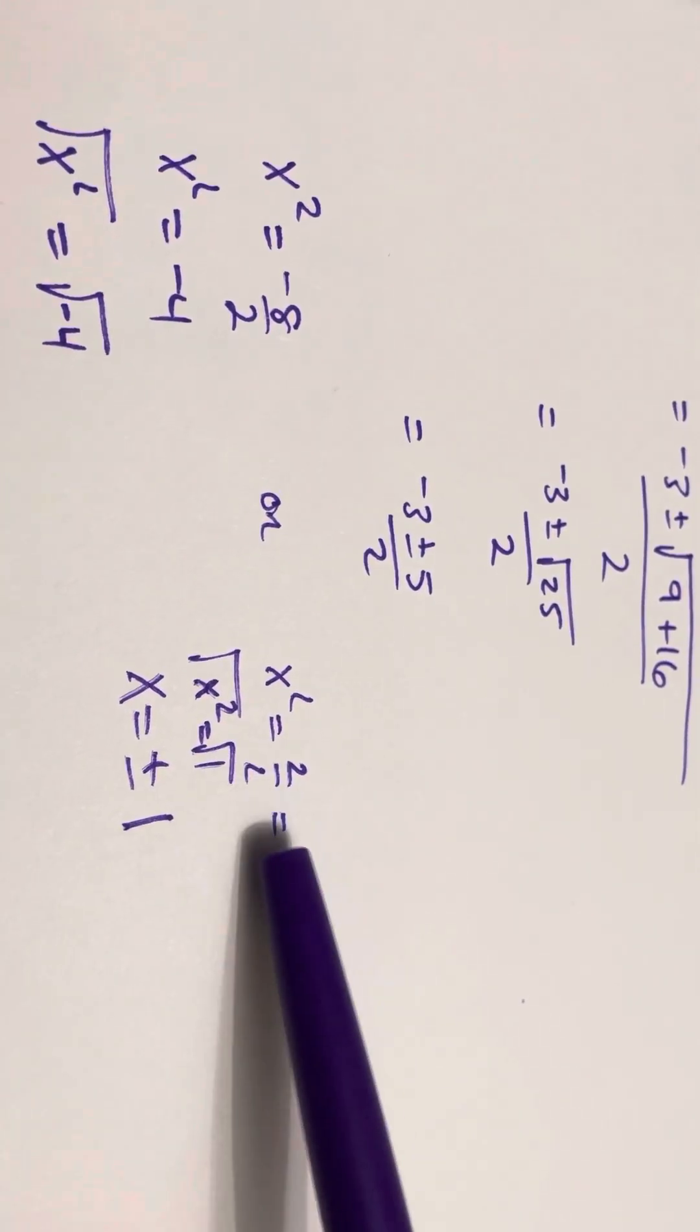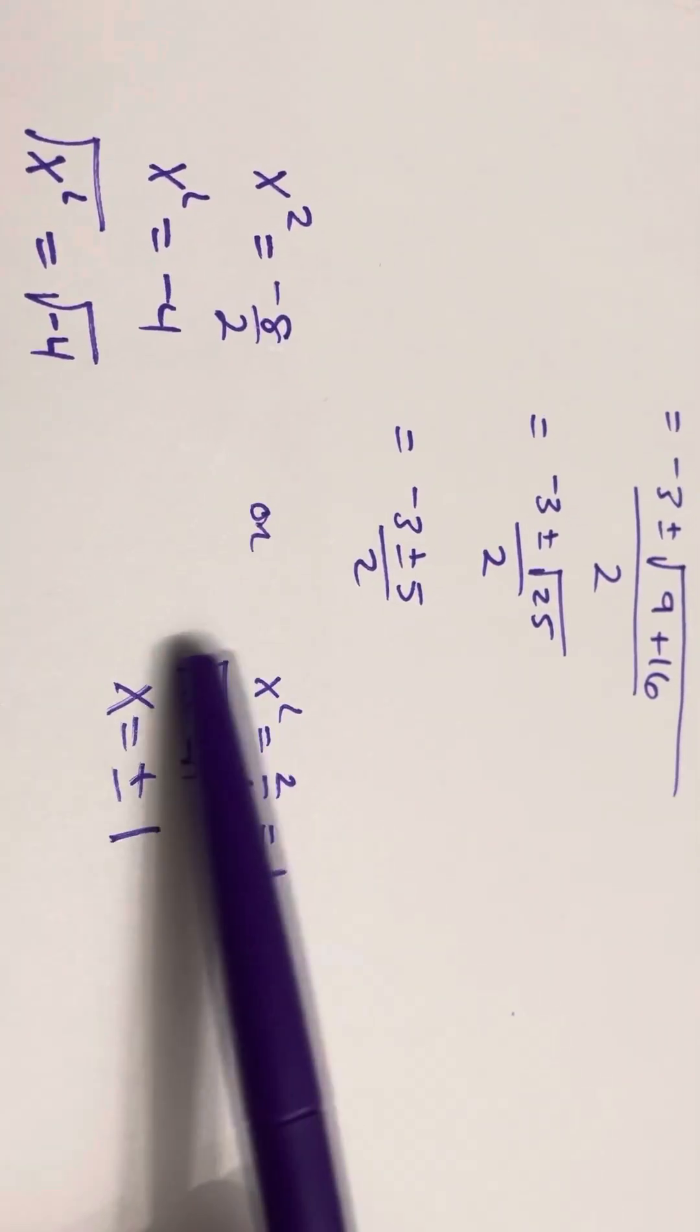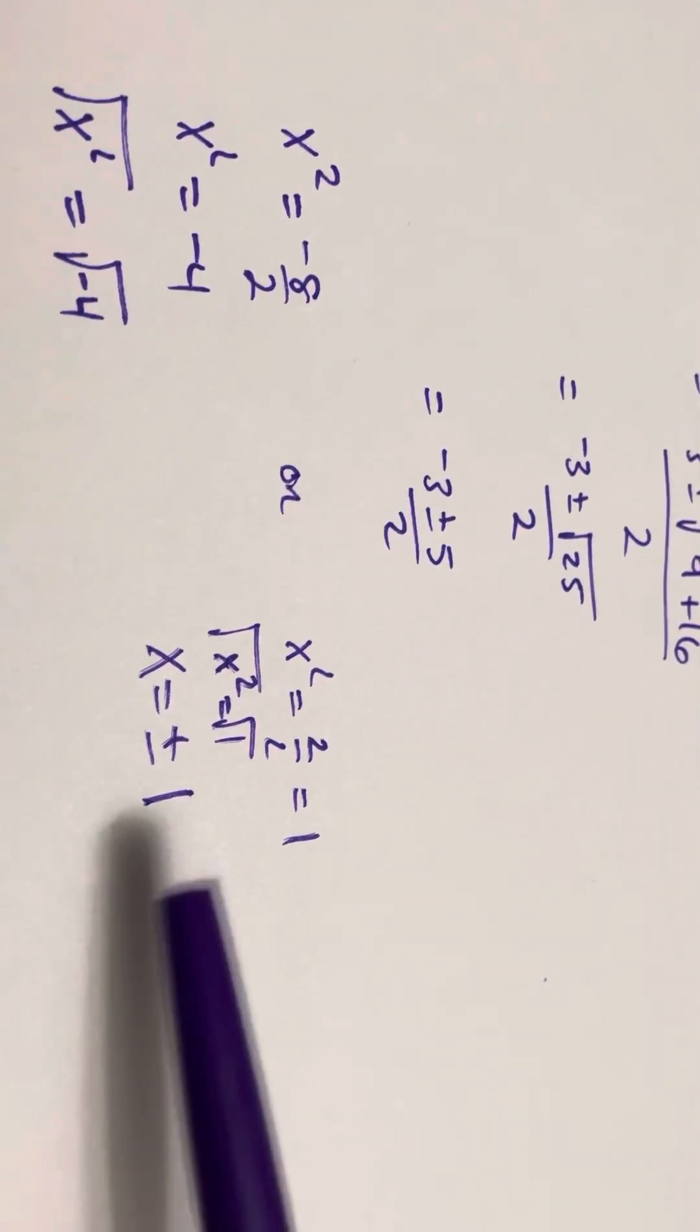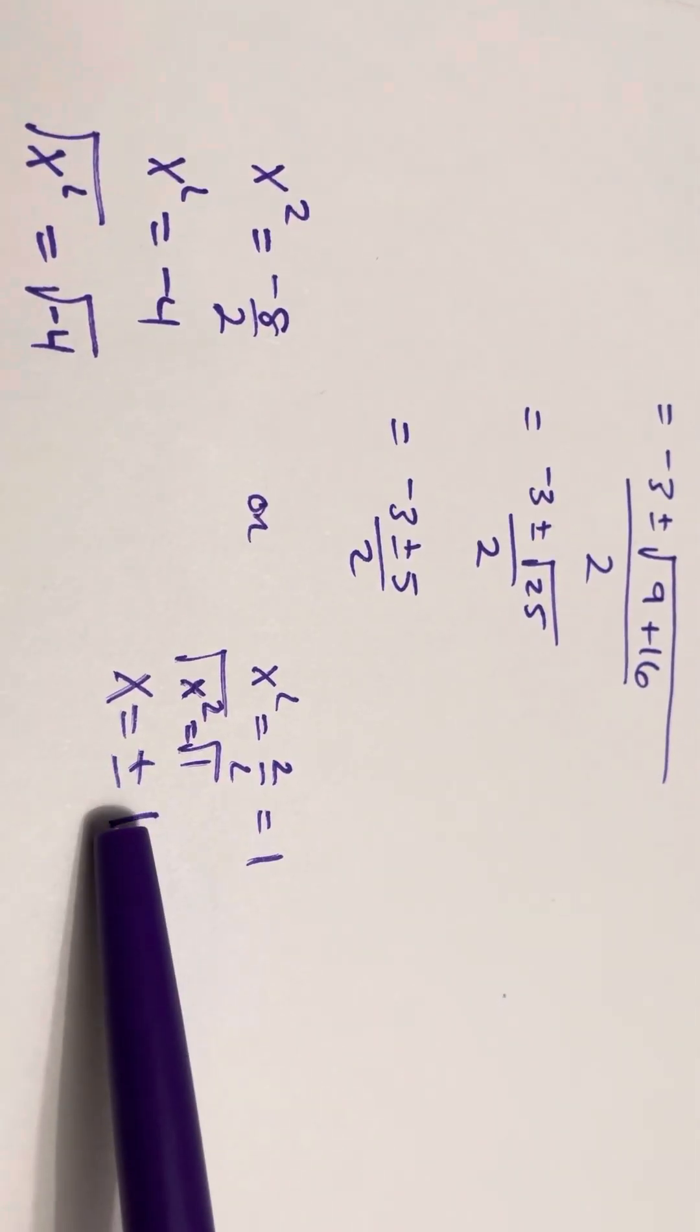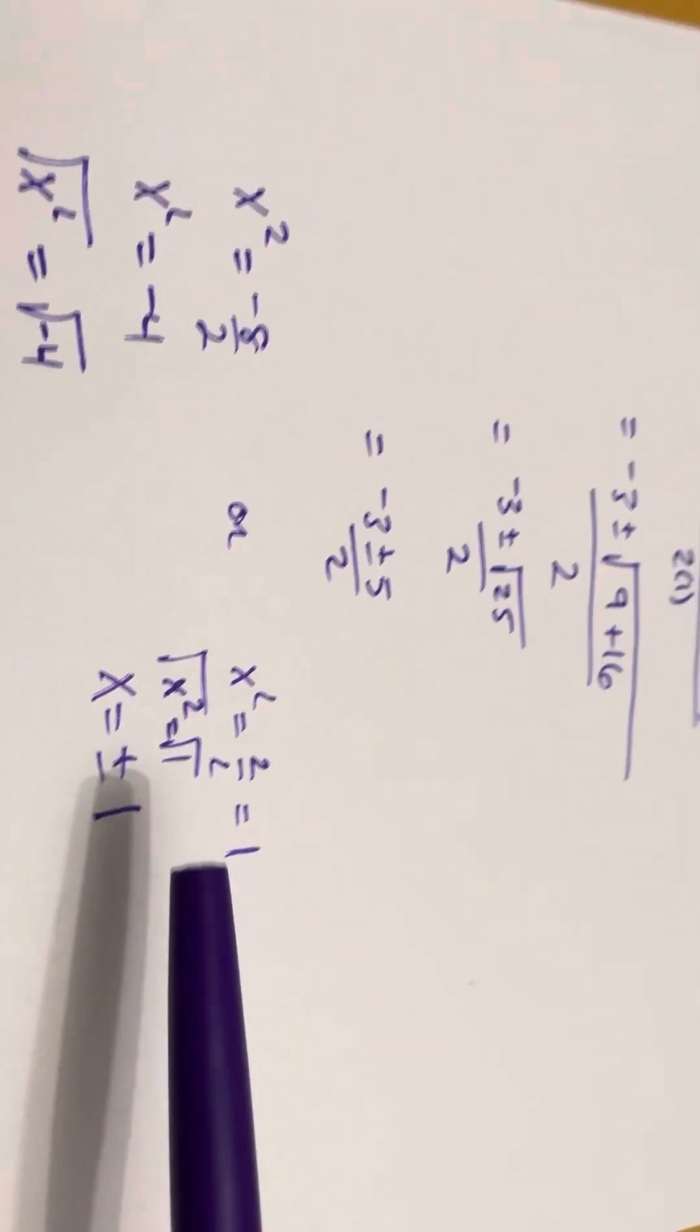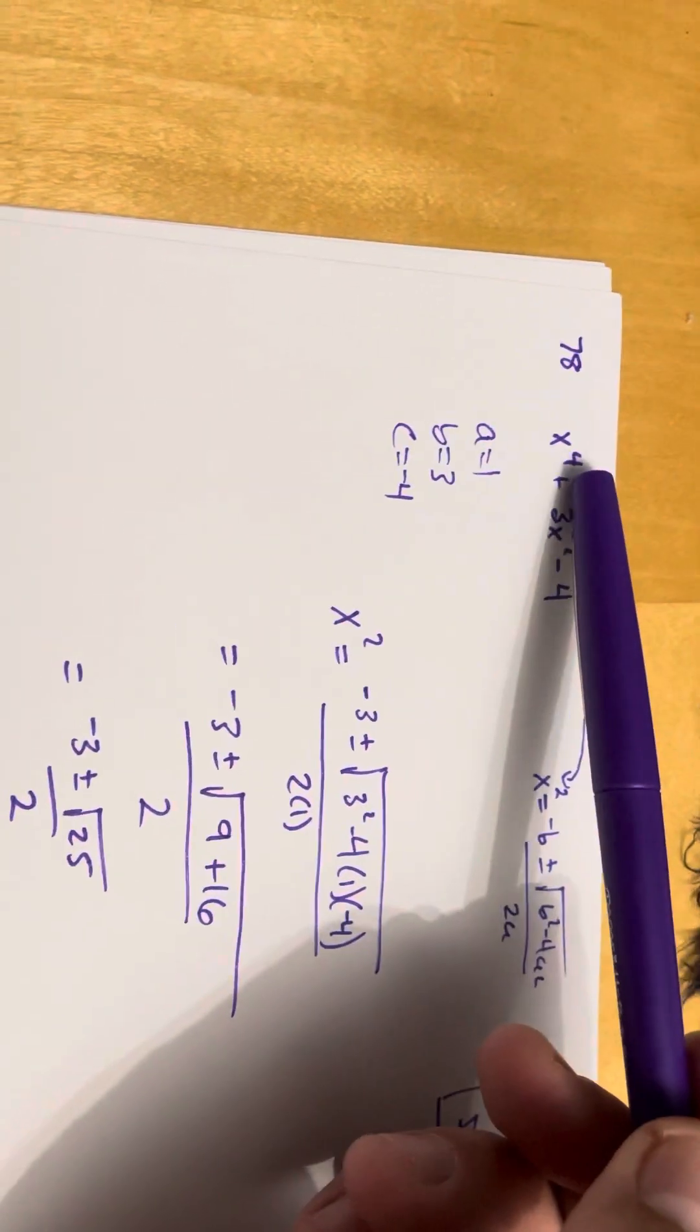So, we have x squared is equal to 2 over 2, which is equal to 1. We take the square root on both sides. And when we do that, we have to remember that the square root of 1 could be plus or minus 1. So, those are two of our answers. Those are 2 of our 4 roots.